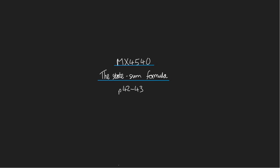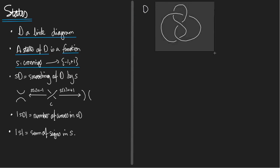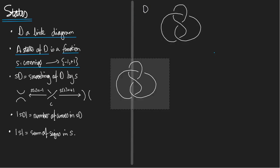So let's begin. I'm going to start by telling you what a state is — a state of a link diagram D. Definition: a state of D is a function s that goes from the crossings of D into the set {+1, -1}. That means s will give us, for each crossing in D, a sign: either plus one or minus one.